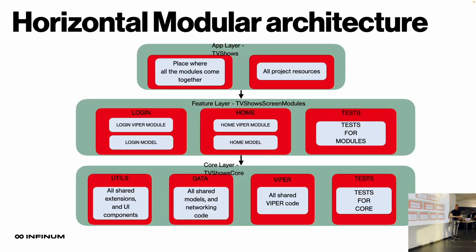Let's introduce the modular architecture. This is the architecture that we are going to implement for the TV Shows application today. As you can see, it only has three layers, but don't worry — it will be just enough to illustrate how modularization works. On our production project, we didn't have only three layers; we had more layers because it made business sense to include them, but for illustration purposes this will be more than enough. So we have the app layer, which is basically called TV Shows and it's our main application. It will be the place where all of the modules will come together, and it will hold all of the project resources. The main application will depend only on the feature layer and there is no circular dependency back to the main application.